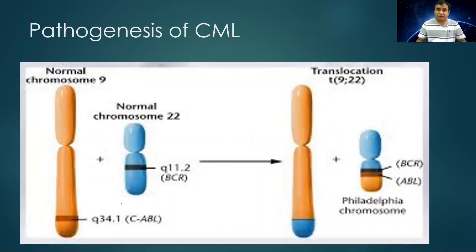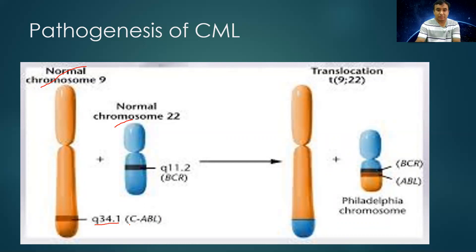To understand the pathogenesis of CML, we need to know about the chromosomal translocation. This is chromosome number 9 and this is chromosome number 22. In chromosome 9, there is a segment on the long arm called Q3.1, whose gene is called c-ABL. On chromosome 22, at Q11.2, there is a BCR segment.